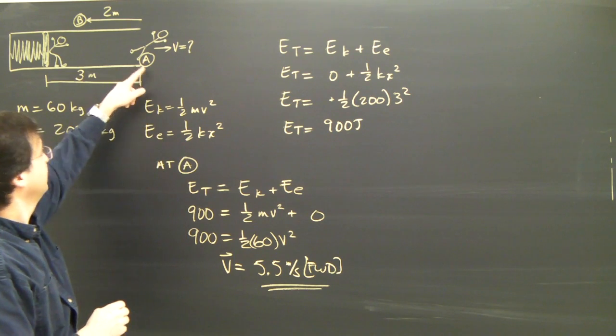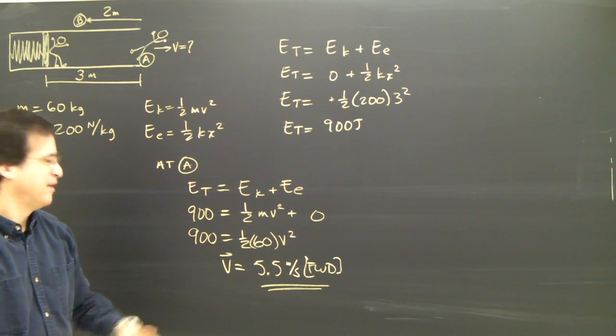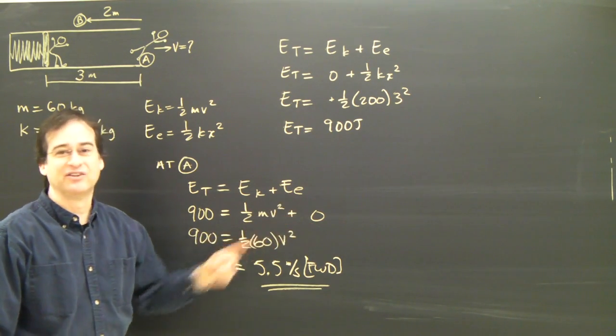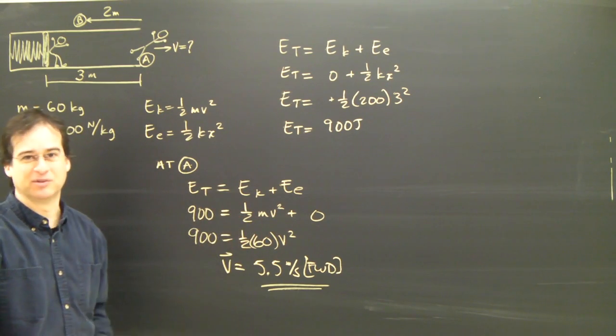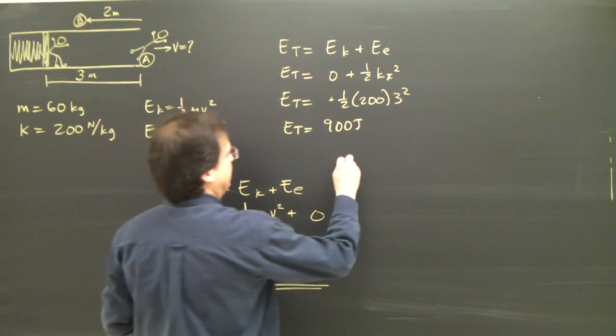So I now have the velocity at A. That was easy because the elastic energy at that point was zero. So it kind of made the numbers a little bit better to work with. Let's try at B.